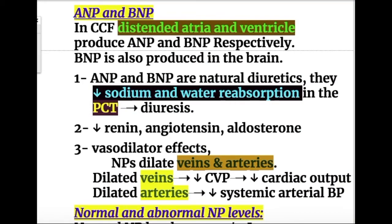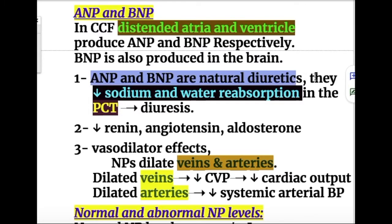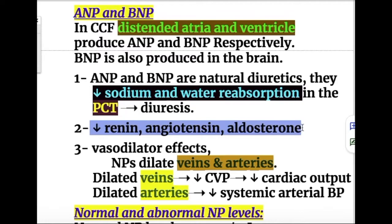The role of ANP and BNP: in congestive cardiac failure, distended atria and ventricles produce atrial natriuretic peptide and brain natriuretic peptide respectively. BNP is also produced in the brain. ANP and BNP are natural diuretics — they decrease sodium and water reabsorption in the proximal tubule, leading to diuresis and preventing edema formation. They also decrease renin, angiotensin, and aldosterone production.